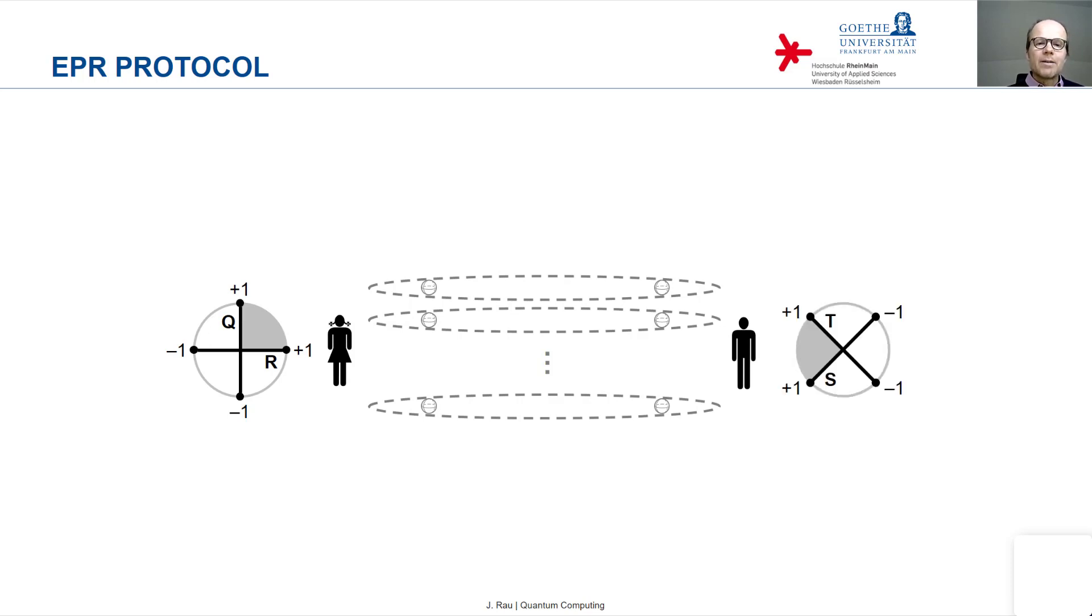And on Bob's side, the observables S and T. So they are the same observables that we saw on the previous slide.